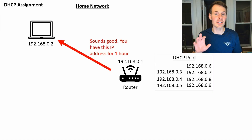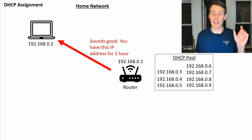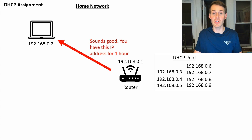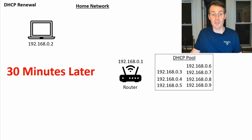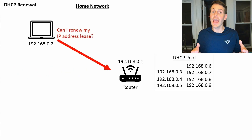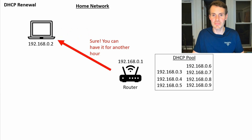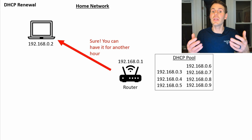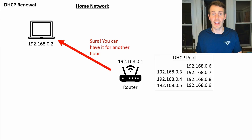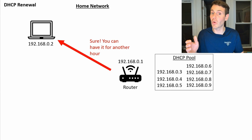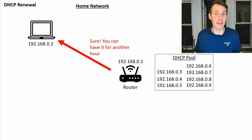So now the laptop has all this network configuration information — it has this .2 IP address for a total lease time of one hour. After 30 minutes, which is half of the lease time, the laptop will reach out to the router again and say: hey, I still want this IP address, I'm still on the network — can you renew the lease? The router says: of course, let's renew and reset it for another 60 minutes. This process continues every half of the lease time until the device leaves the home network and doesn't renew its lease.